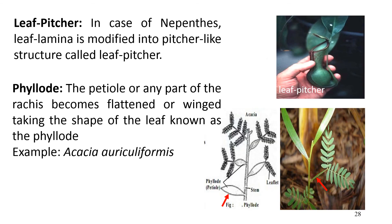Some plants have insectivorous leaves — devices to catch insects to fulfill the deficiency of nitrogen in the medium where the plant is growing. In pitcher plants, the leaf lamina is modified into a pitcher-like structure. Another modified form is the phyllode, where the petiole or any part of the rachis becomes flattened and takes the shape of a leaf, known as a phylloid. For example, in Acacia, the petiole is expanded to form a leaf-like structure, as you can see in the lower right picture.